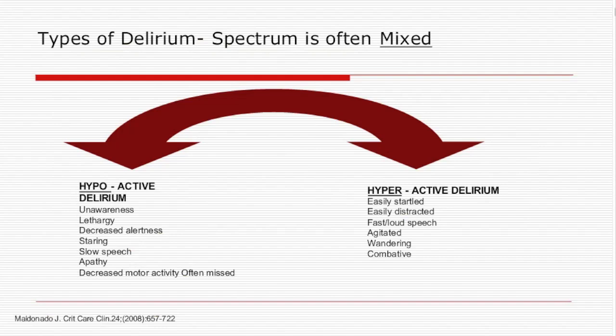A lot of times we fail to recognize delirium because there are different forms. Some patients with delirium are very hyperactive — any nurse who has worked on a floor recognizes something has gone wrong when a patient starts yanking out tubes, kicking, screaming, or yelling. But this is just one form of delirium. It's the hypoactive patients — those who passively stay in their beds when we try to get them up — who are resistant and very passive. Many of these patients get labeled as being pleasantly confused.